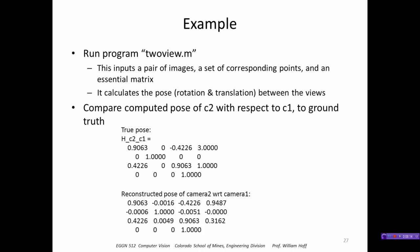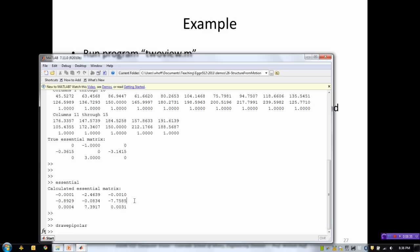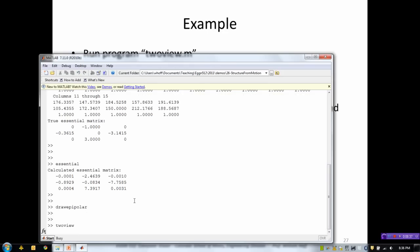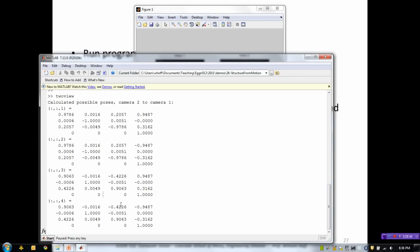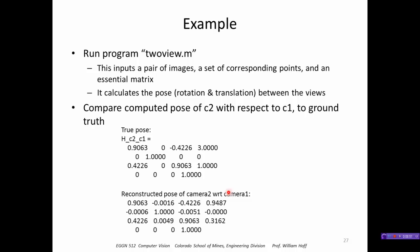So I'll run this example called 2view. This does all that I just mentioned. It inputs a pair of images, essential matrix, calculates the pose and figures out which one of those is correct. So those are the points and here are the four possibilities, and here is the one that it finally calculated. So we look at these and we can see that yes, this does match the true pose that we knew from before. The rotation matches almost exactly and the translation matches except for that unknown scale factor.